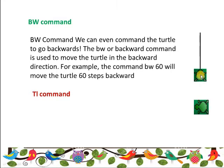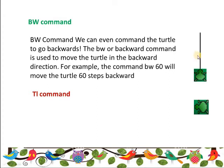You write bw space 70 to move 70 steps backward, or bw space 100 to move 100 steps backward. Whatever the number of steps you want to take your turtle back, just write bw, a space, and then the number of steps. The turtle will move backward to that position. This is how you use the backward command.